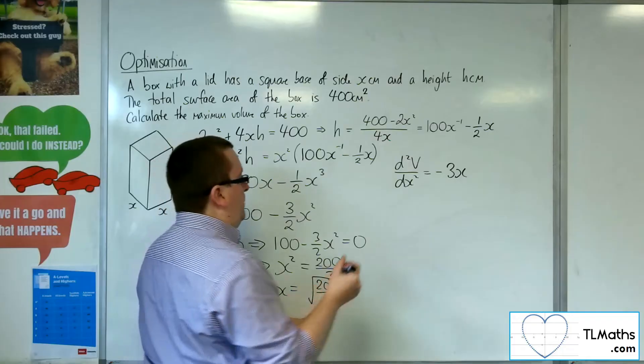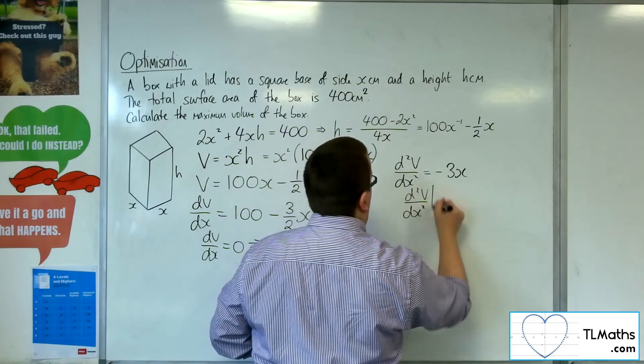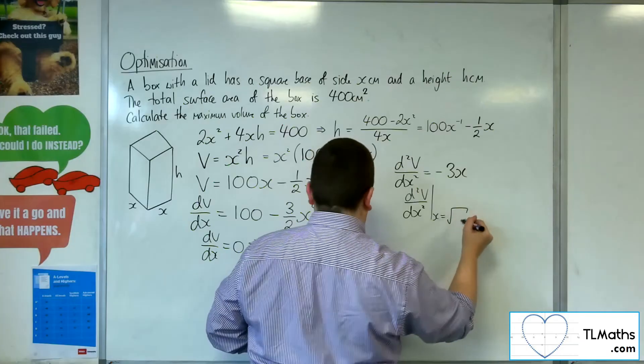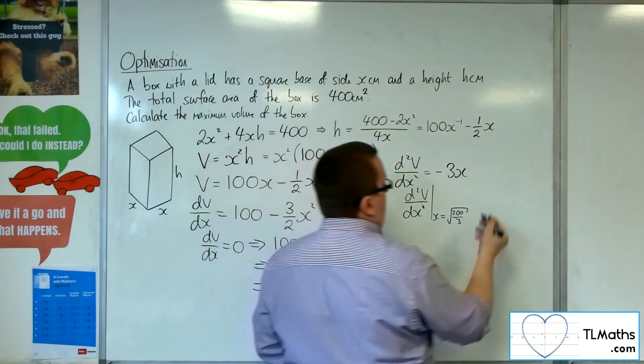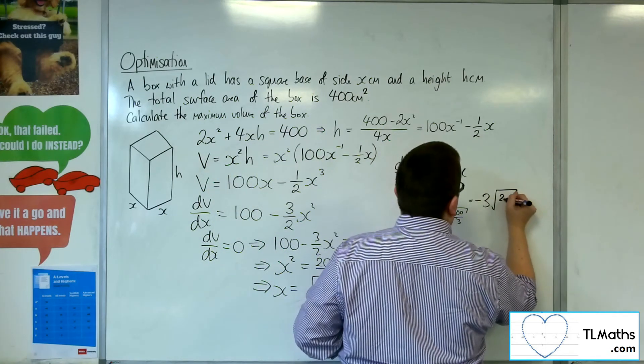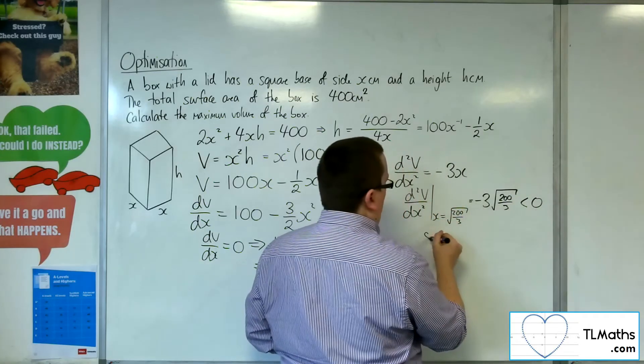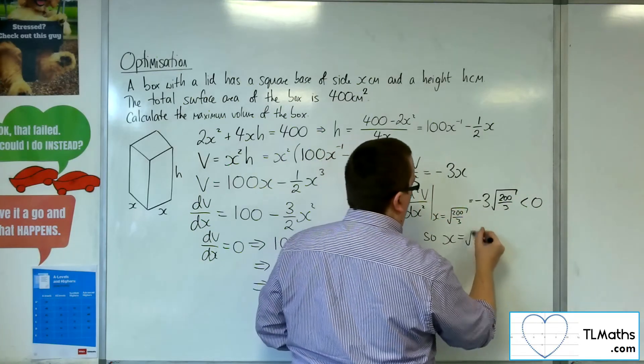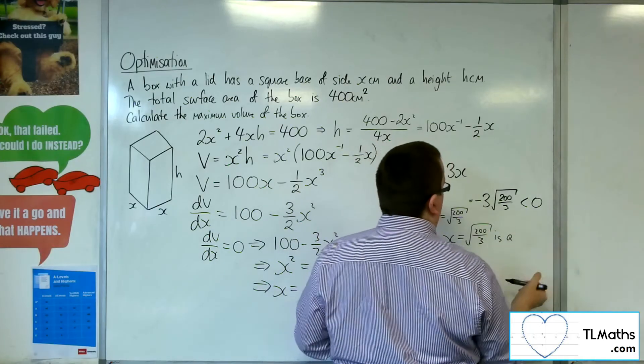I want to substitute in the value of x that I've just found. So I'm going to get minus 3 lots of the square root of 200 over 3, which is clearly negative. So x equals the square root of 200 over 3 is a maximum.